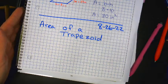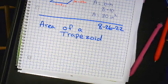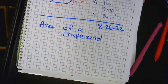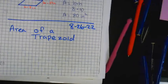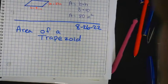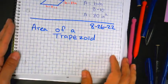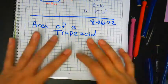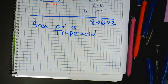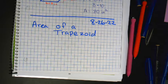We don't want you to skip chunks in your notebook. We want your notebook to last you forever, so you've got to fill in every spot you can. Because if not, you're going to be buying notebooks every three months, and your parents are going to get mad.